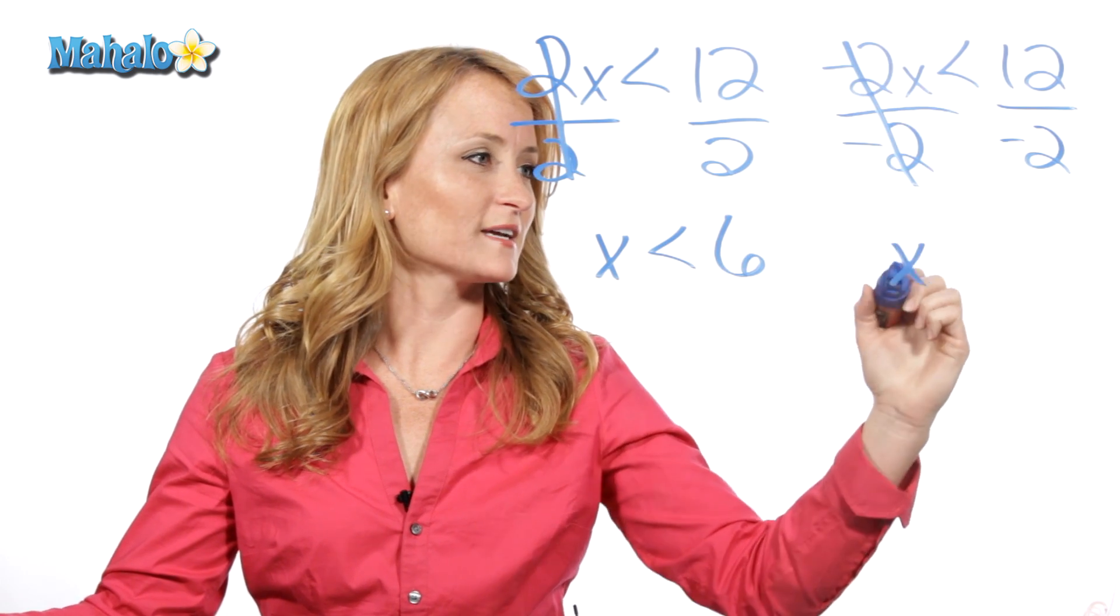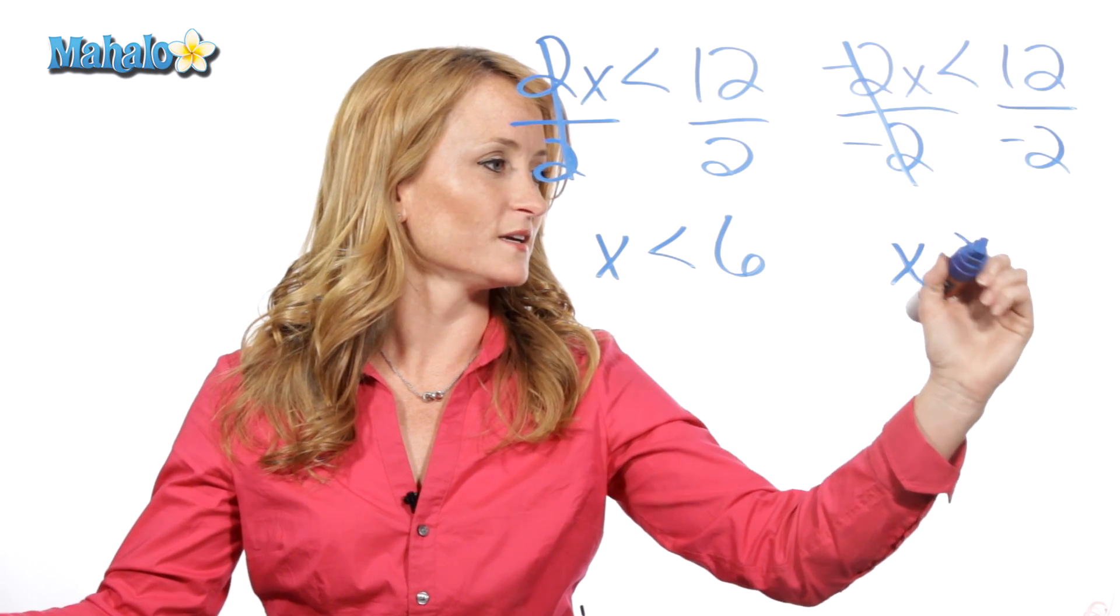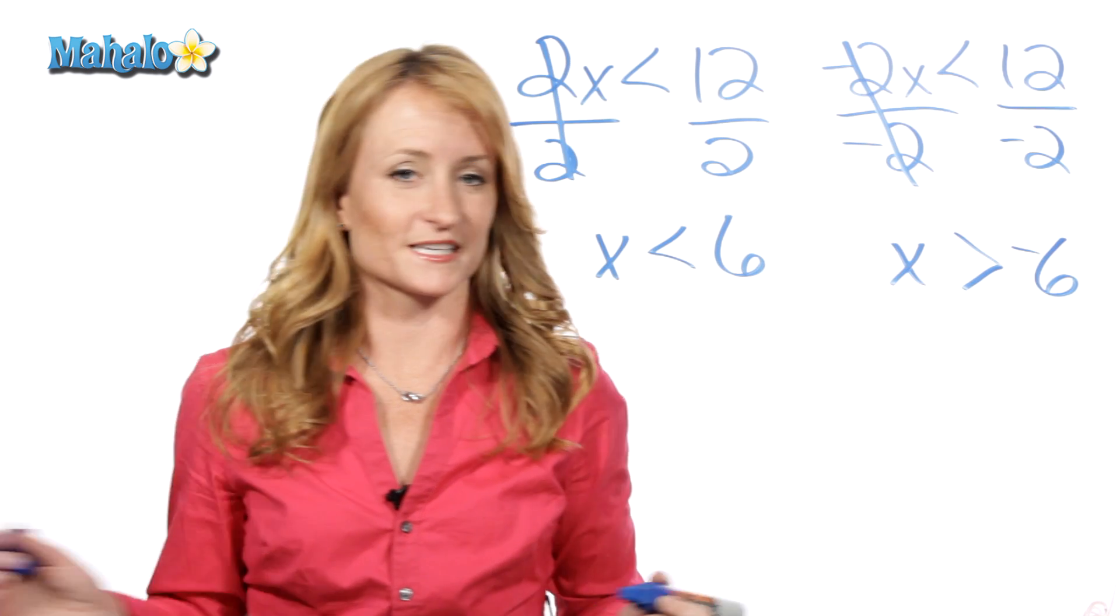So we divided by a negative, we're left with x... Because we divided by a negative, we need to flip this inequality to greater than. And 12 divided by negative 2 is negative 6.